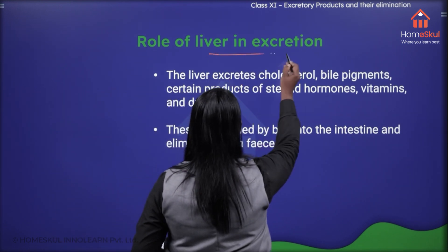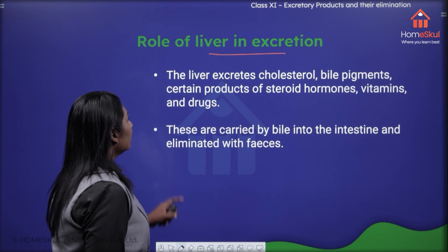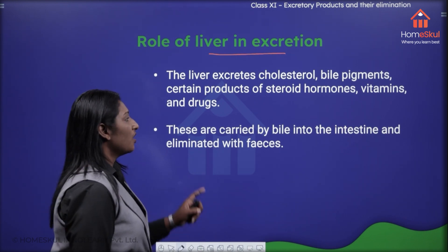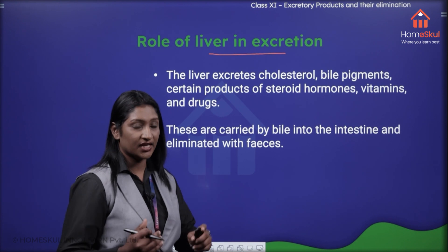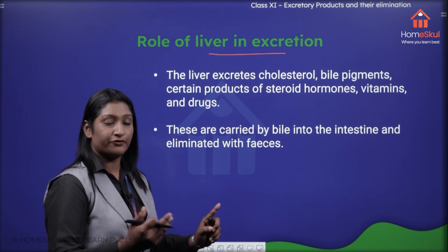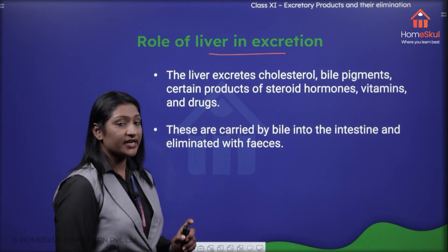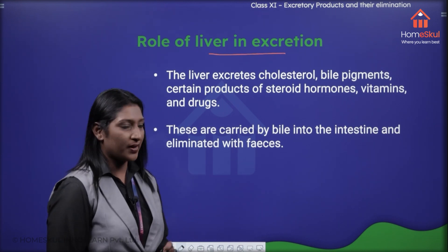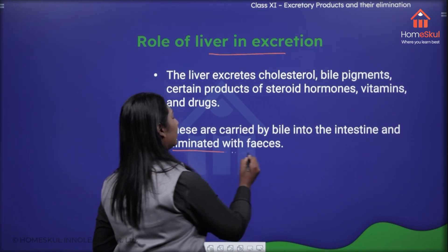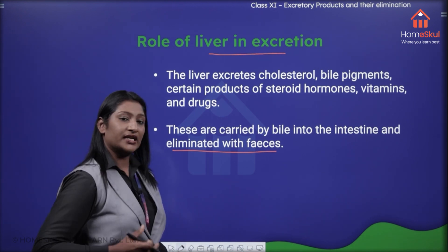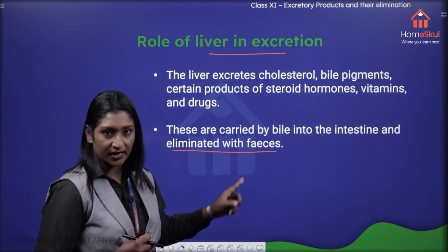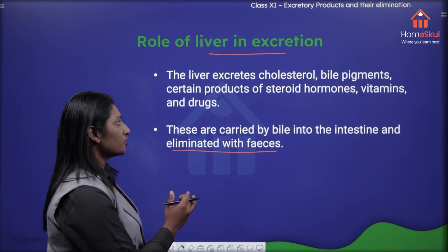What is the role of the liver in excretion? The liver excretes cholesterol, bile pigments, certain products of steroid hormones, vitamins and drugs. The liver is a detoxifying center as well, so all these excess substances can be eliminated through the liver. These are carried by bile into the intestine and eliminated with the feces.